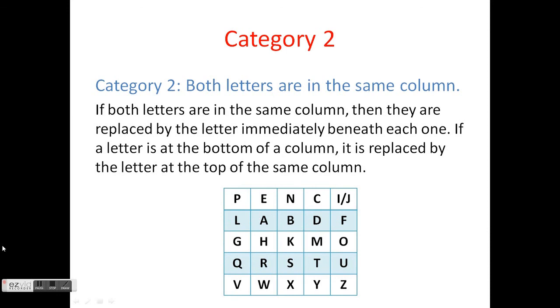If both letters in the plaintext digraph are in the same column, then replace each letter with the letter which is directly beneath. Let's say we wanted to encipher the plaintext digraph AW. First, highlight the A, then highlight the W. These letters are in the same column, so replace A with the letter which is underneath, which is H. Since W has no letters beneath it, we circle back to the top of the column. W becomes E. The plaintext digraph AW enciphers to the ciphertext digraph HE.